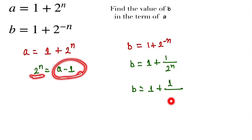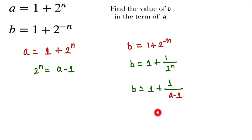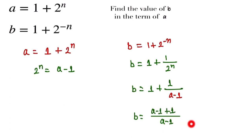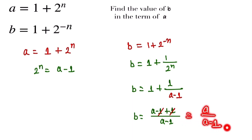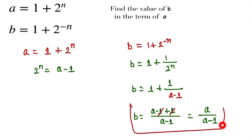With the denominator a minus 1, we take the LCM. This gives us (a minus 1 plus 1) over (a minus 1). The minus 1 and plus 1 cancel, leaving us with b equals a over (a minus 1). This is our final answer — b expressed in terms of a.